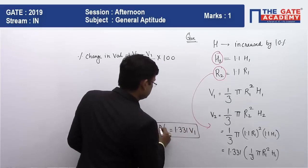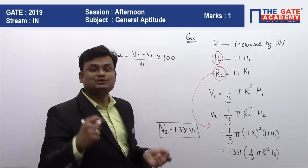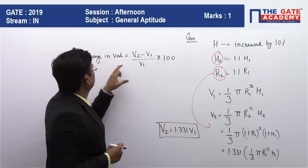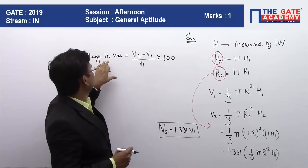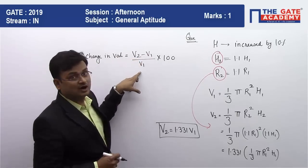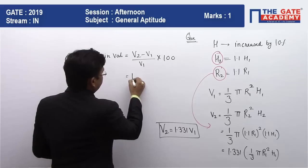Now, what is the percentage change formula? Percentage change in volume will be equal to (V2 - V1) / V1. So let's substitute the value.